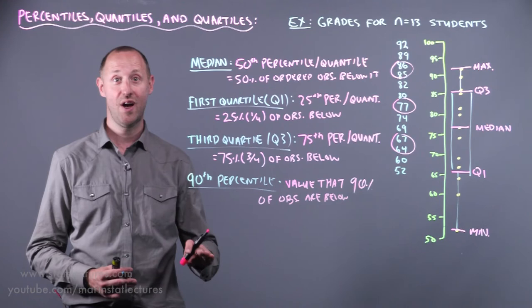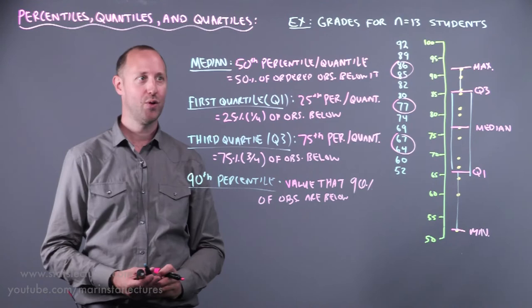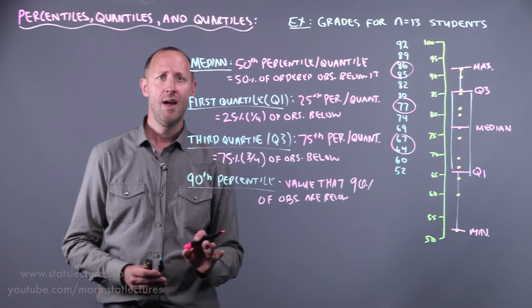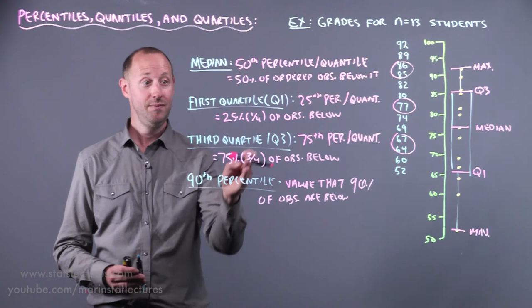So the first quartile and third quartile are the 25th and 75th percentile. Those ones are often reported as they're kind of nice percentiles to look at. But really, we can report any percentile we want. It's also important to note that right now our discussion has been on defining a percentile, say the 75th percentile, and finding out which value that corresponds to.